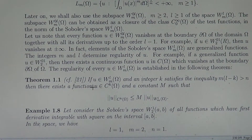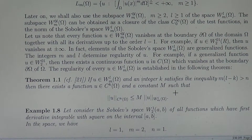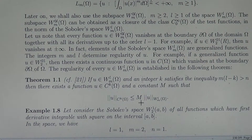Theorem: If U is an element of W^{L,M}(Ω) and an integer K satisfies the inequality M times (L minus K) greater than N, then there exists a regular function — K times differentiable on Ω — and there exists a constant C such that the norm of U in C^K(Ω), the maximum norm, is less than or equal to C times the norm of U in the Sobolev space W^{L,M}.